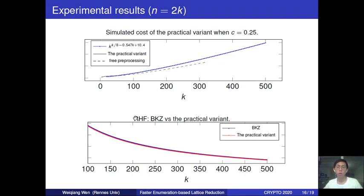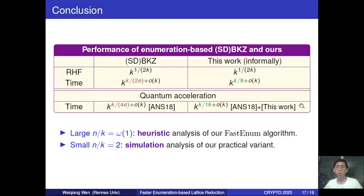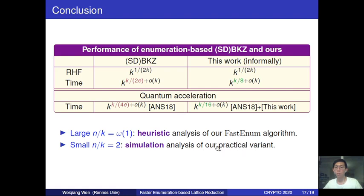The root Hermit factor achieved by the practical variant is at least as good as the one achieved by standard BKZ. To conclude: for reaching the same root Hermit factor, we achieve a smaller time complexity of k^{k/8} plus a small order of k instead of the old k^{k/(2e)}. Considering constant-factor acceleration, we can get a further factor-of-two improvement. This improvement is supported by different evidence for different parameter regimes: when the dimension is large enough (n/k = ω(1)) we can prove it under a heuristic assumption, and when the dimension is small (n/k = constant) it is supported by our simulation analysis of the practical variant.